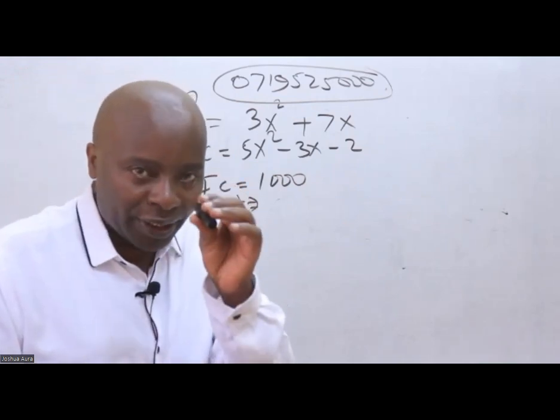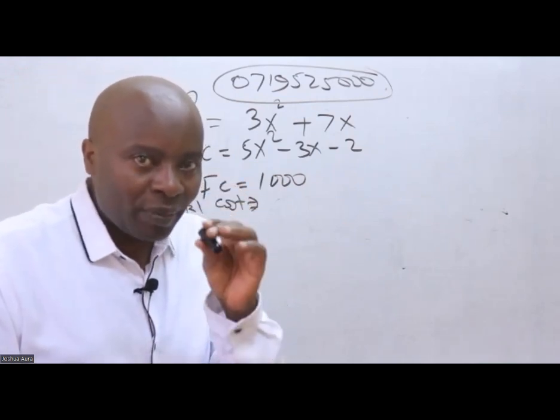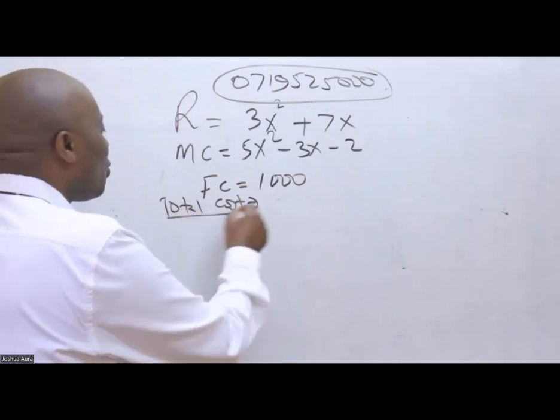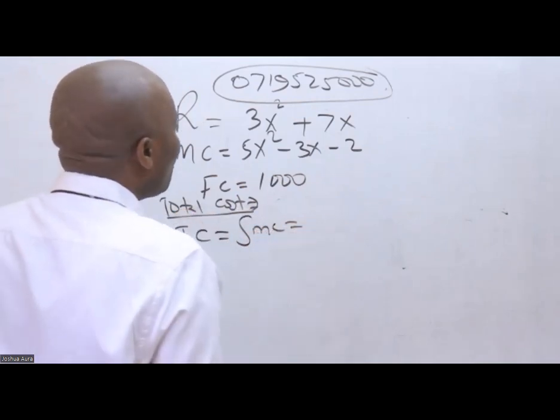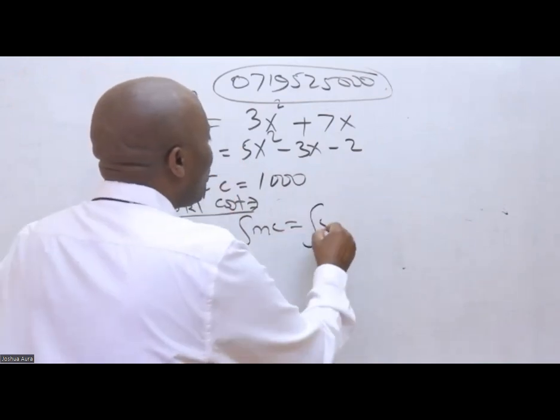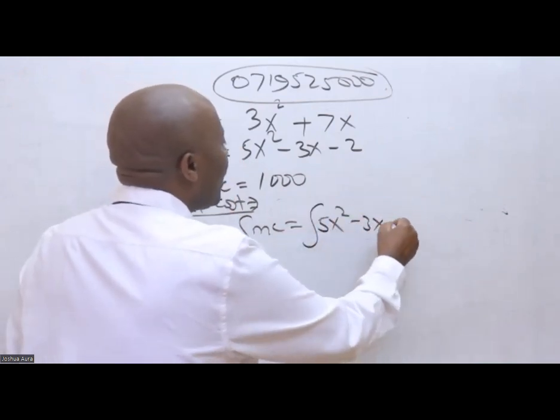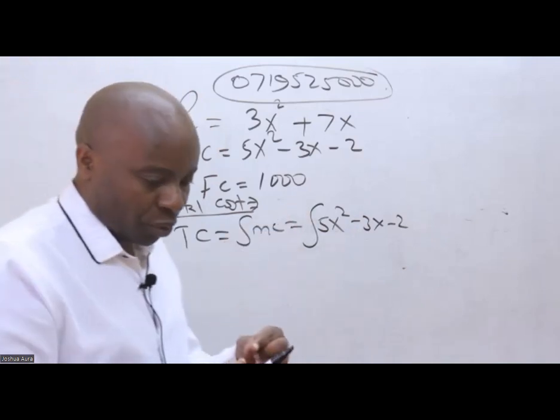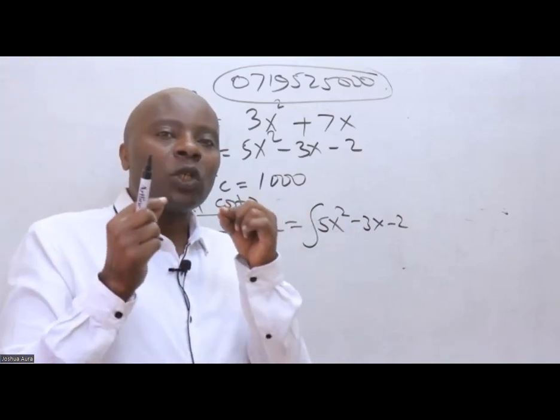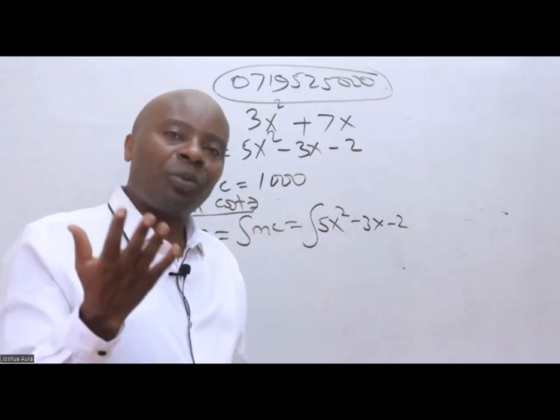Marginal must be integrated. To give us total cost, we must integrate the marginal. So you're saying that to get total cost, come and integrate the marginal cost, which is 5x squared minus 3x minus 2. You have to integrate the marginal cost to get total cost.